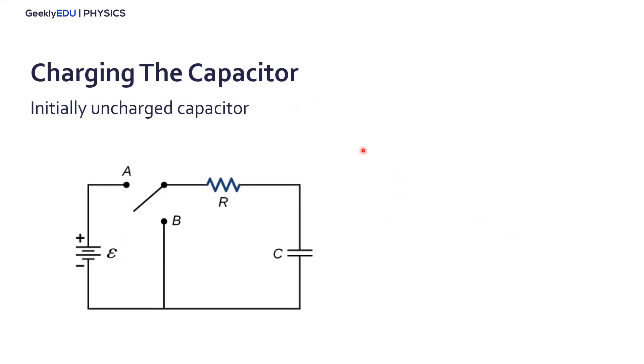We can start with an initially uncharged capacitor. There's no charge on the capacitor, so we want to charge this capacitor. In order to do it, we can turn the switch to point A. When you do it, we start charging the capacitor. The current starts flowing in this direction and we are charging the capacitor.